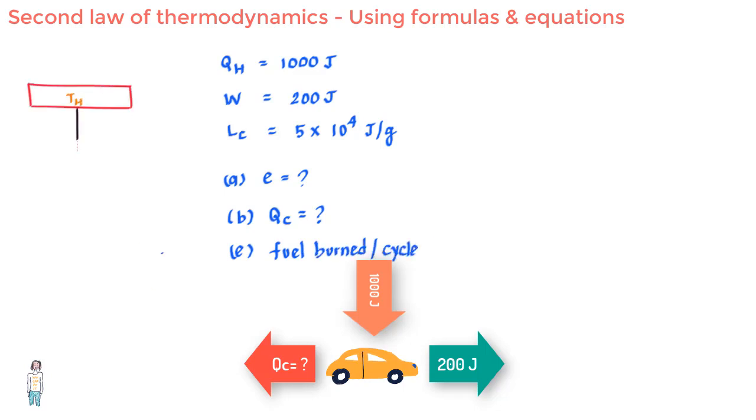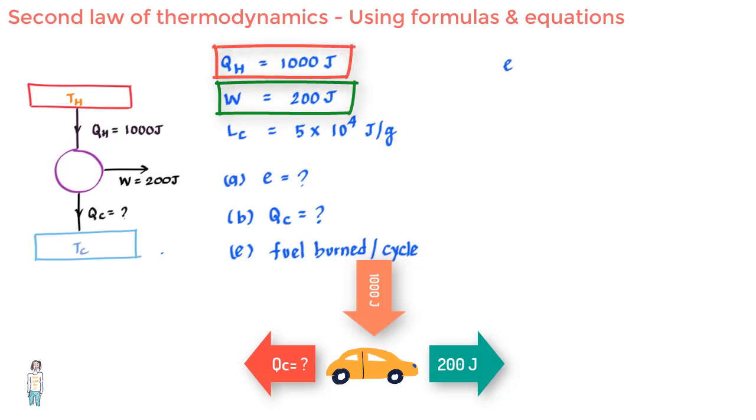Part A is quite simple. We know that efficiency e is equal to work delivered divided by heat input, which here is equal to 200 upon 1000, which is equal to 20 percent.